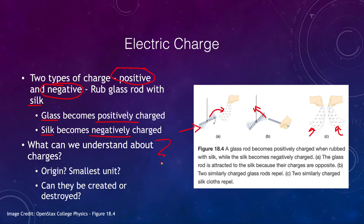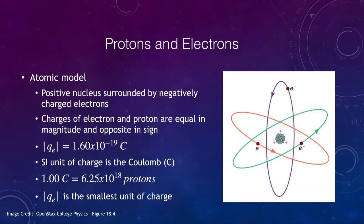What can we understand about charges — where do they come from, how small can they be, and can they be created or destroyed, or is charge conserved like mass and energy? To answer this, we go to an atomic model. In the atom, we have a nucleus at the center which is positively charged, and electrons that orbit around it.